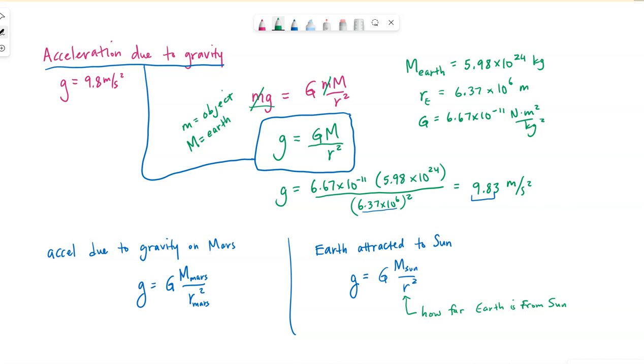We could do the same for the moon attracted to the earth. The moon is experiencing a gravitational acceleration towards the earth. We could calculate it. We would need to know the mass of the earth, so m in this equation is whatever object is causing the acceleration, and then r is the distance from center of mass to center of mass, so distance from earth center to moon center.